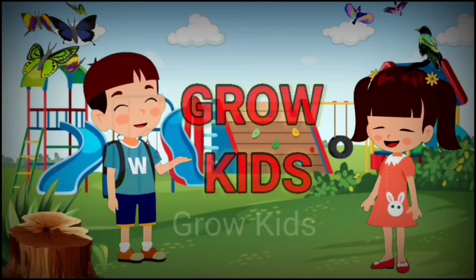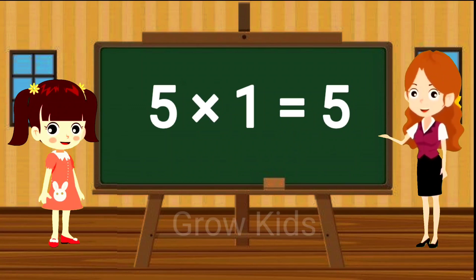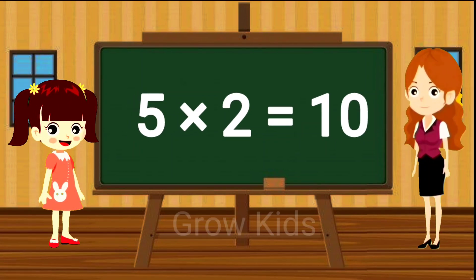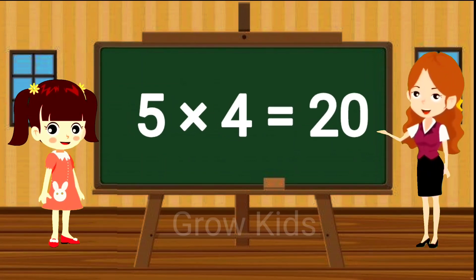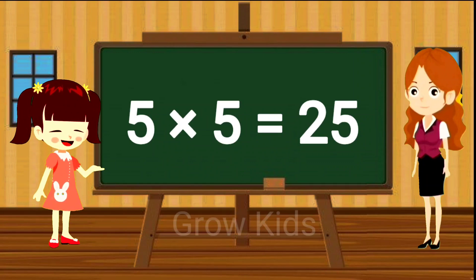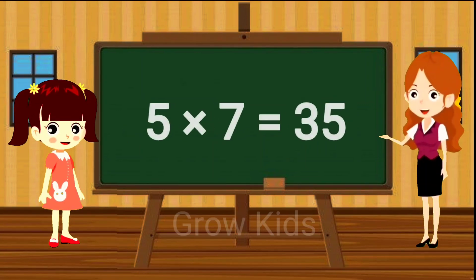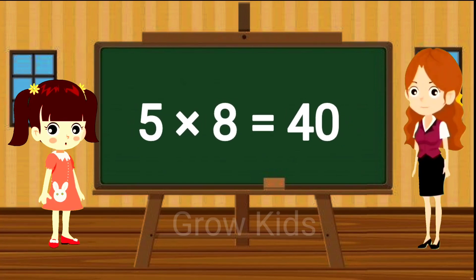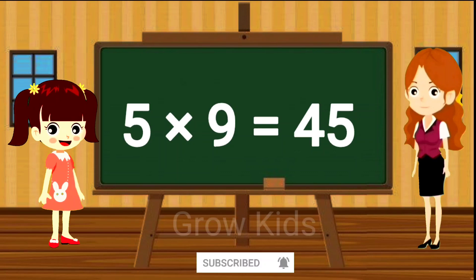GRU KIDS Table of 5. 5 ones are 5. 5 twos are 10. 5 threes are 15. 5 fours are 20. 5 fives are 25. 5 sixes are 30. 5 sevens are 35. 5 eights are 40. 5 nines are 45.